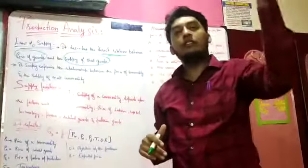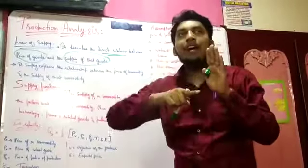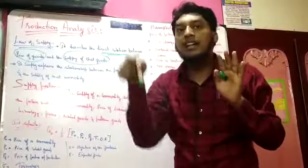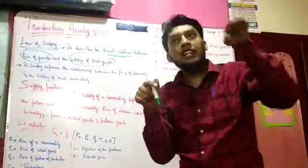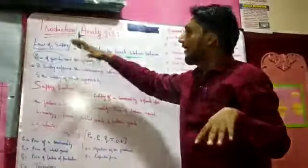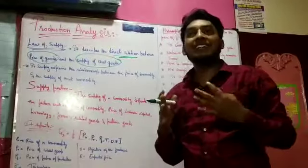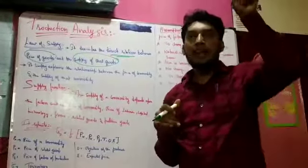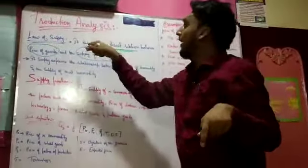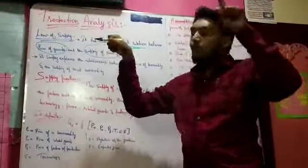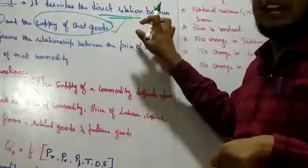Let's go back to our previous classes when we learned about the law of demand. When prices increase, demand decreases. When demand increases, price reduces. In the same way, the law of supply — in demand, when you have extra demand, price should get down, so people will come and buy more. But in supply, when the price is high, you will sell the product very effectively.